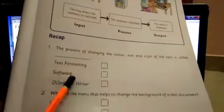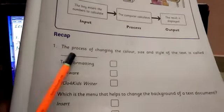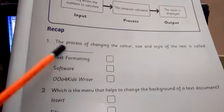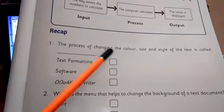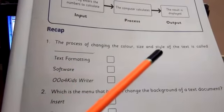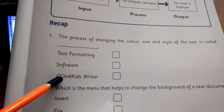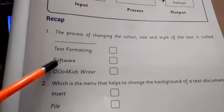Once you see this recap. The process of changing the color, size and style of the text is called what? We call text formatting. Software are OOo4Kids. Put the correct answer.